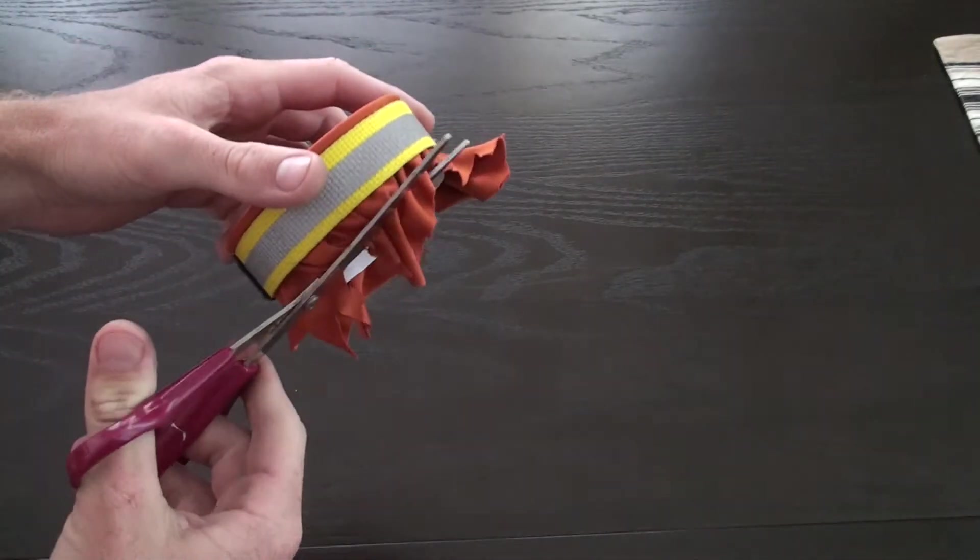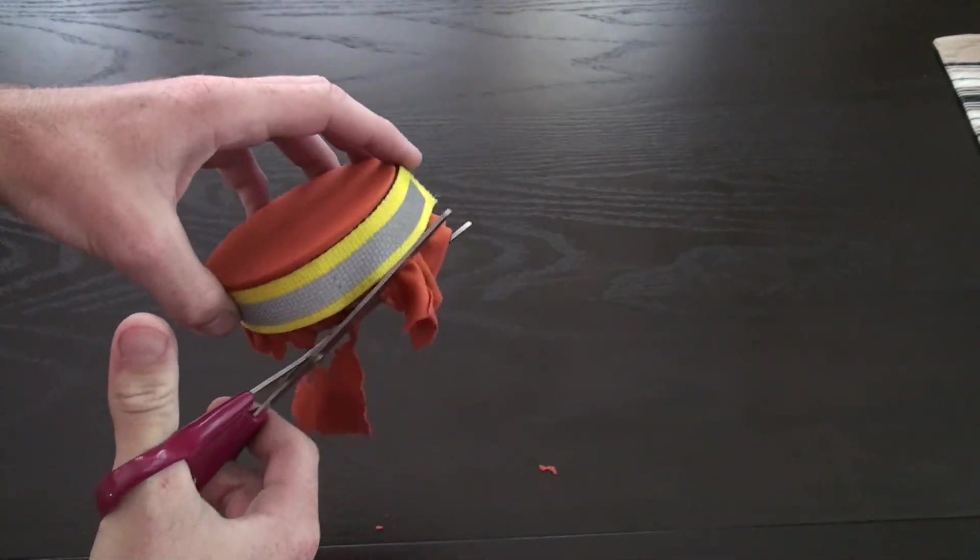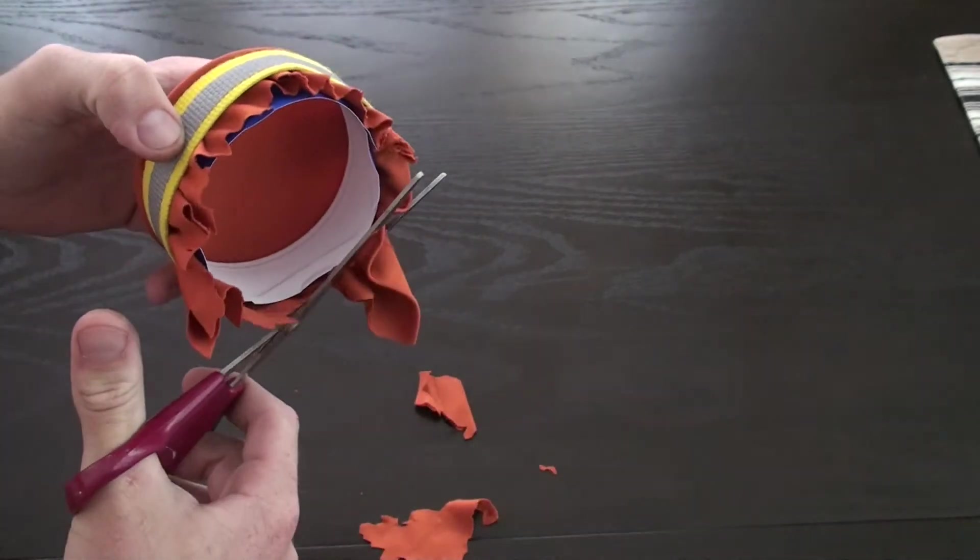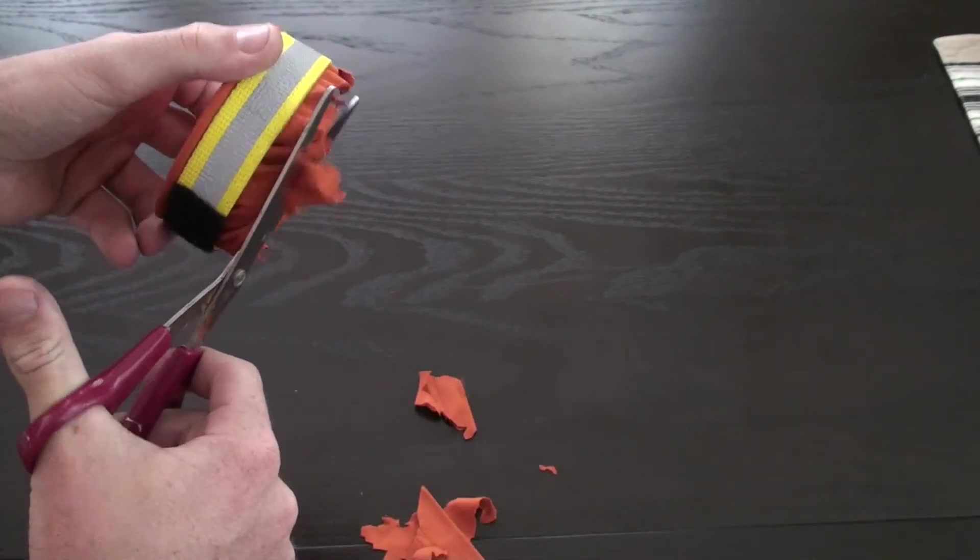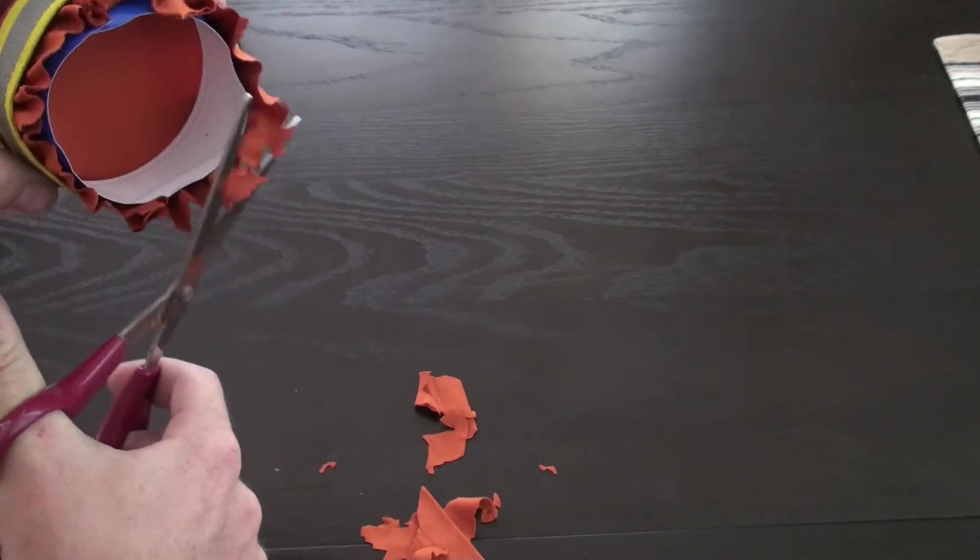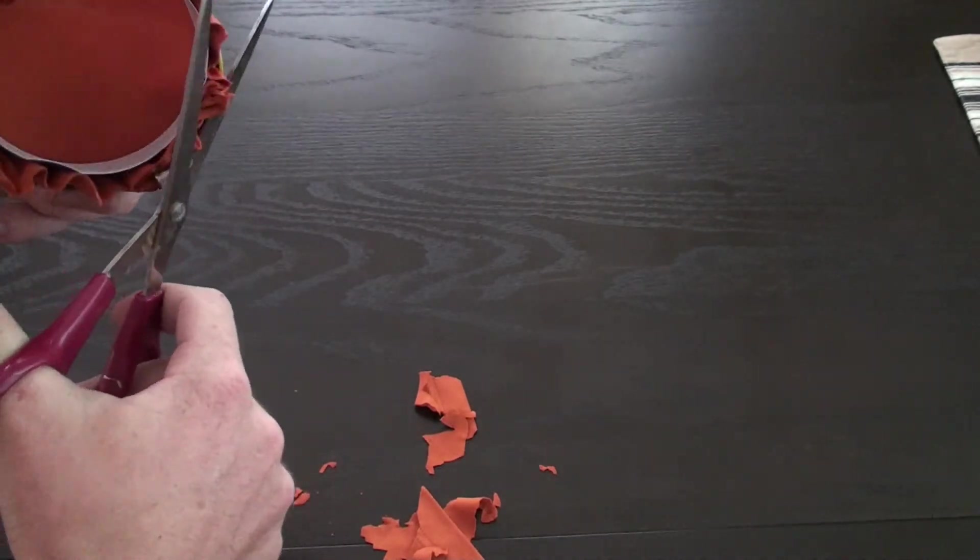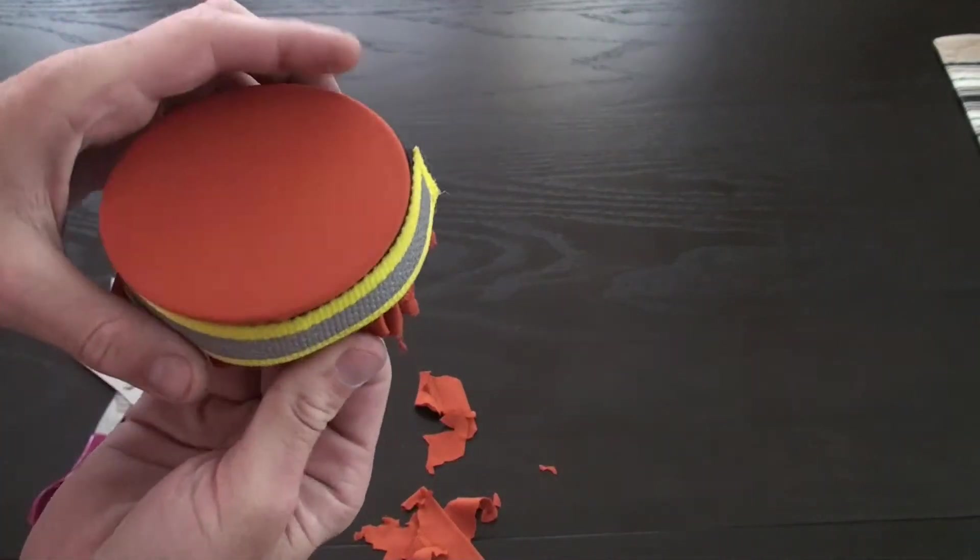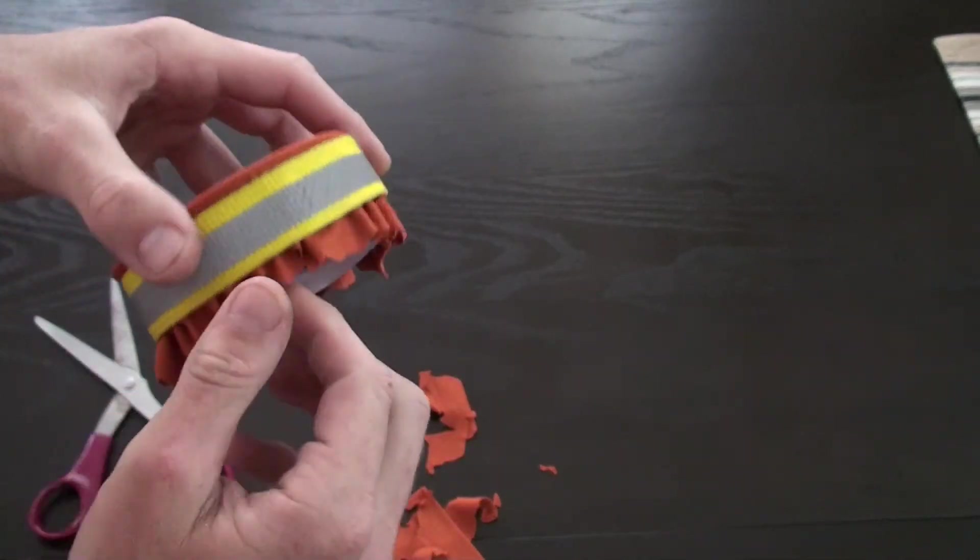The last thing you can do is to trim the material so it's nice and flush. Now I did leave a little bit of excess, but you can get pretty close. Now what you do want to remember is to leave enough so that you can pull it back through if it does loosen up.